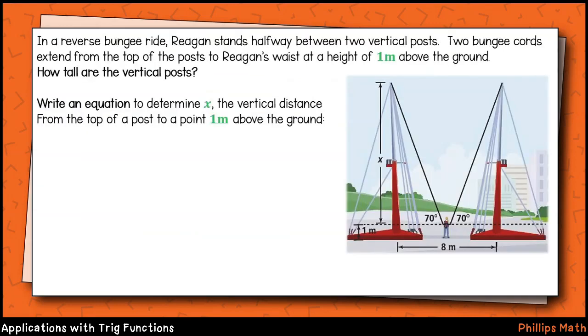A reverse bungee ride is similar to the bungee and trampoline ride at Mall of Georgia. A person is launched into the air by releasing the tension in stretched elastic cords which are tethered to the rider by a harness. In this particular example, Reagan stands halfway between the two posts containing the elastic cords. The points of attachment create a sort of vertex and cords themselves form an angle of elevation of 70 degrees. The question asks us to find the height of the vertical posts themselves.